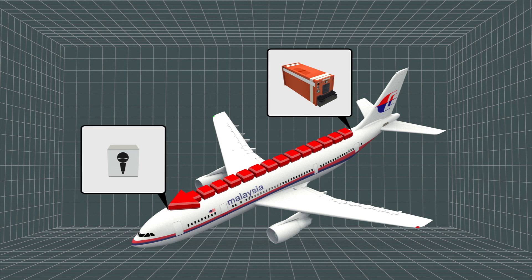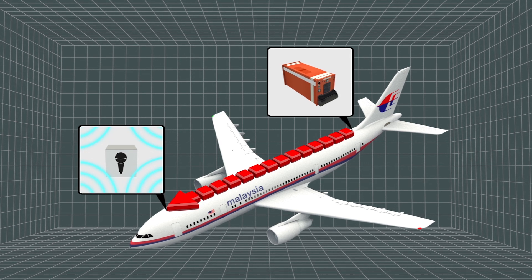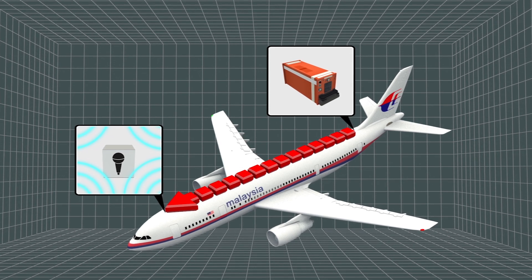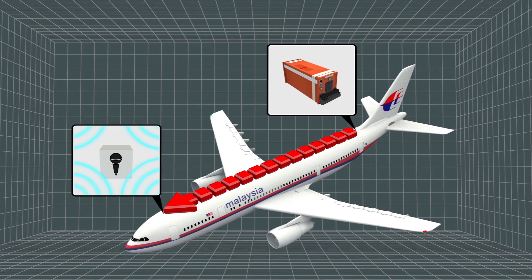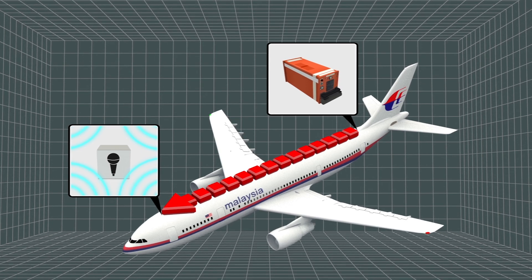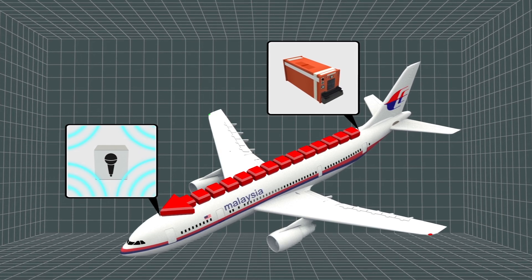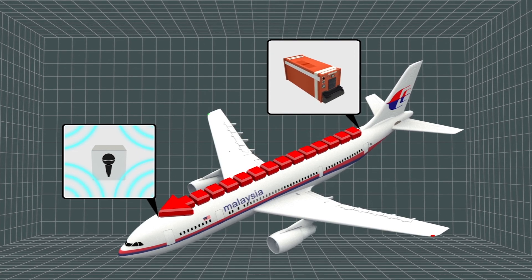The cockpit voice recorder uses microphones in the flight crew's headset and a centrally located microphone in the cockpit to record conversations, radio communications, and ambient noise.